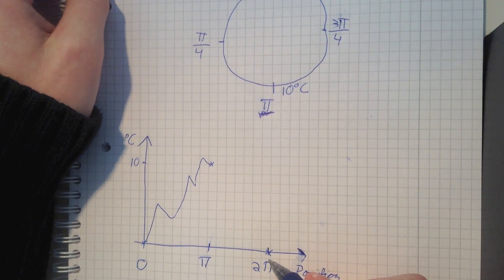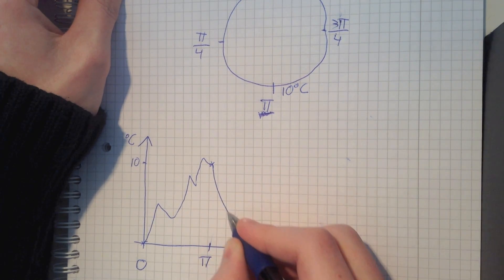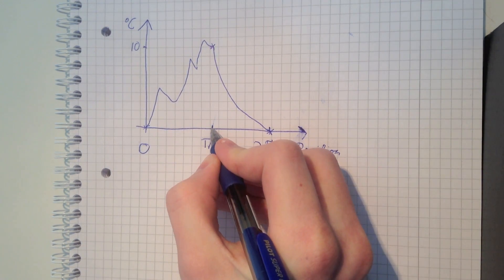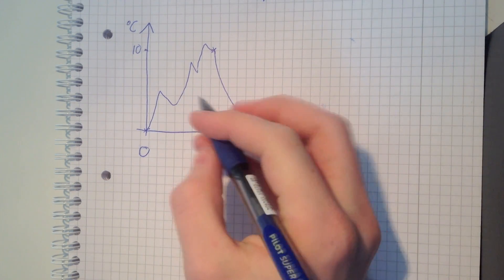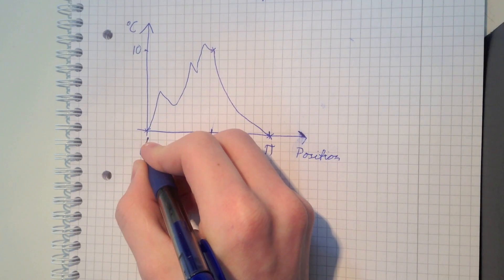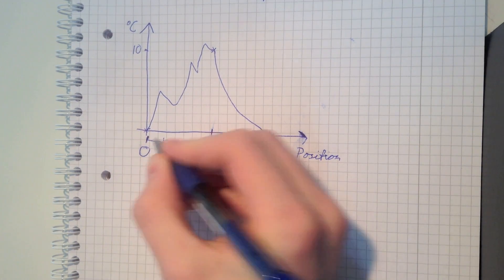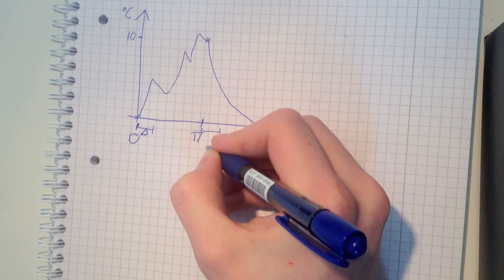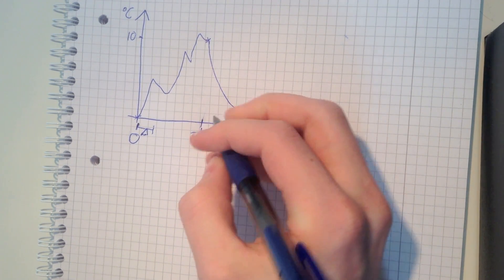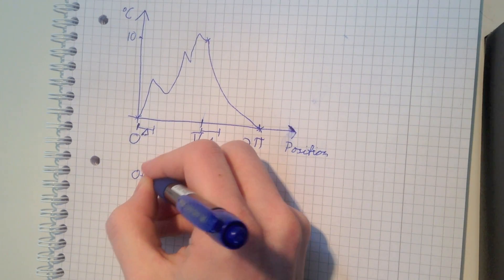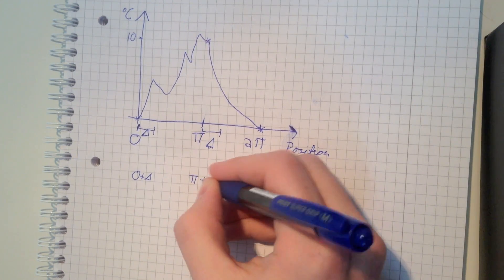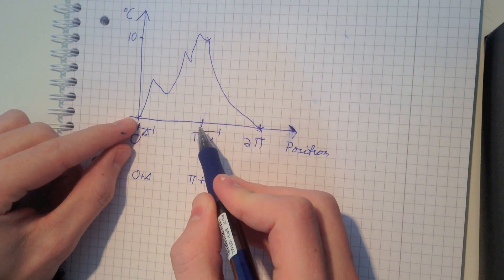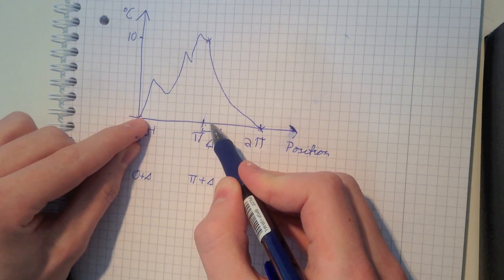If I go a random length of position out here and call that delta, and I take the same length from π and also call it delta, then position 0 plus delta is on the opposite side of the Earth from π plus delta. No matter how much you move, if you move the same length from 0 and from π, you will always be on opposite sides of the Earth.